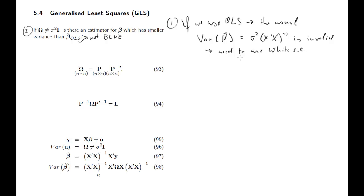The second consequence was that if you have heteroscedasticity, then the OLS estimators were not BLUE any longer — they were not the best linear unbiased estimators anymore. So that begs the question: is there another estimator, one that has smaller variance? And the answer is going to be yes, and I'll show you how. Before we do that we need a little bit of algebra.